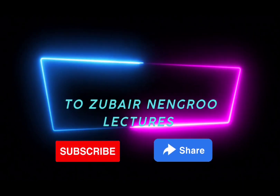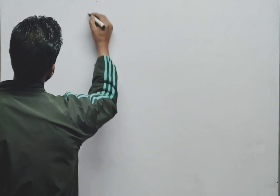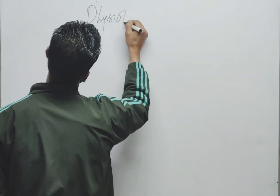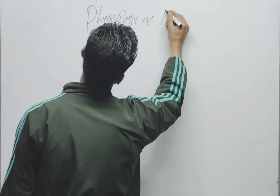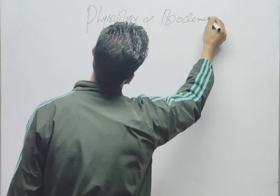Hello dear students, I welcome you all on my YouTube channel. Today we will discuss the guest paper of Zoology for BSc Third Semester. The paper is Physiology and Biochemistry, framed by a renowned expert in this subject. Kindly share, subscribe, and like this channel. The paper title is Zoology Physiology and Biochemistry for third semester, and there are four units.